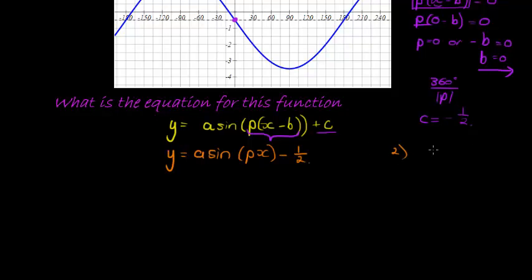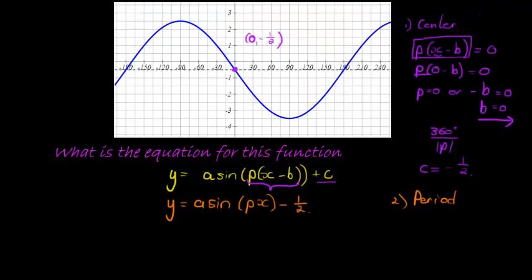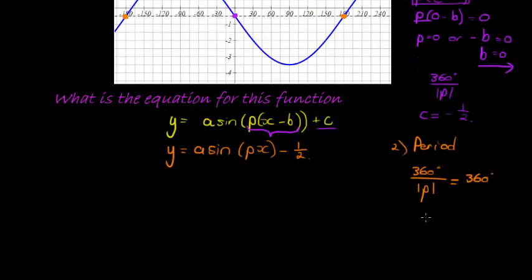The second step that we did is we marked off the period. The period, again, is how long does it take to complete one cycle? Now don't mark it on the x-axis. We're working on the center line. So from negative 180 to positive 180, that distance is 360. So we have that 360 divided by the absolute value of p, the positive part of p, and this gives us the answer or the period. Now we can see the period is 360 degrees. Now what that now means is that p must have been equal to 1, the absolute value of p. So that means p is either equal to 1 or p is equal to negative 1.